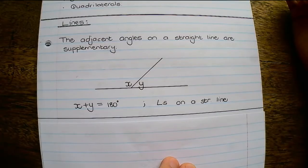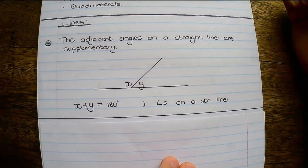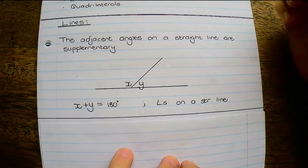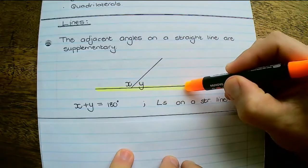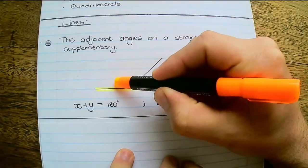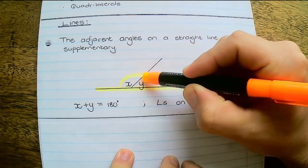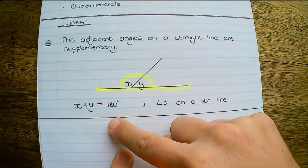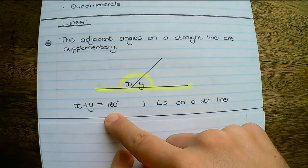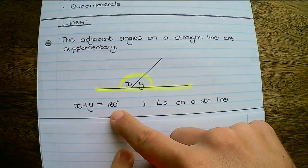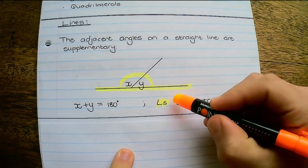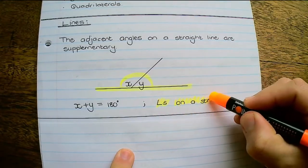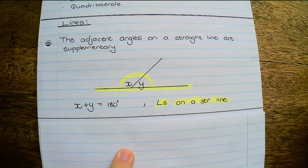Our first reason is: adjacent angles on a straight line are supplementary. What you're looking for is a straight line, and what it means is that all the angles on the straight line will add up to 180 degrees. The acceptable reason is 'angles on a straight line' — that's all you need to say.